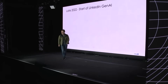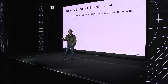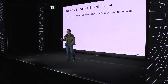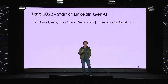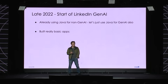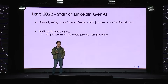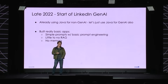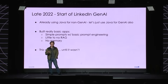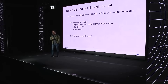Come late 2022, which was really LinkedIn's first foray into Gen AI, we saw that we were already using Java for non-Gen AI use cases, so let's just use Java for Gen AI also. Some of you might be wincing — I can already anticipate that. At that time, we built some really basic apps: simple prompts with basic prompt engineering, little to no RAG, no conversational memory to speak of. This was okay until it really wasn't.